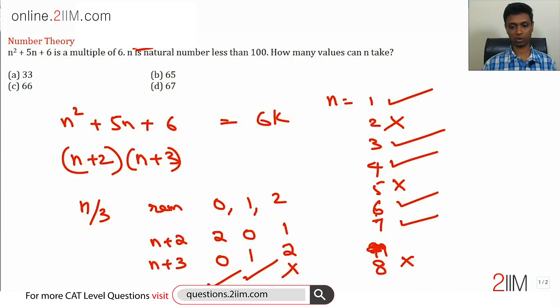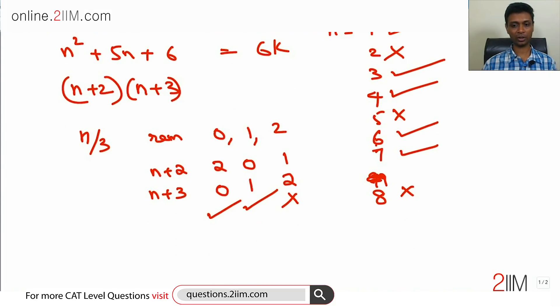We have 99 numbers to worry about, 1 to 99. Now we know that for numbers 2, 5, 8, 11, 14, all of that, it doesn't work. Remaining numbers 1, 3, 4, 6, 7, 9, 10, 13, 14, all of these it works.